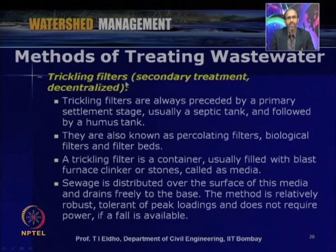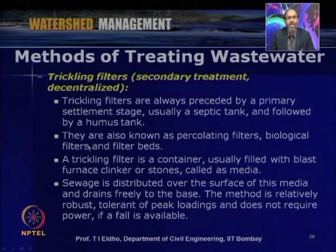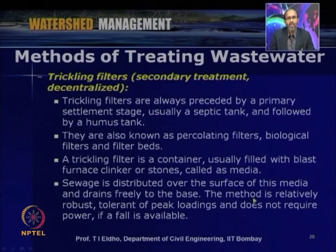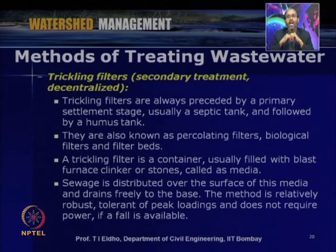Another conventional treatment technique is the trickling filter, used for secondary or tertiary treatment. Trickling filters are always preceded by primary settlement storage — usually a septic tank — and followed by a humus tank. They are also known as percolating filters, biological filters, or filter beds. A trickling filter is a container filled with blast furnace clinker or stones as media; wastewater is distributed over the surface of the media and drains freely to the base, where waste material is absorbed. The method is relatively robust, tolerant of peak loadings, and does not require power if a fall is available.